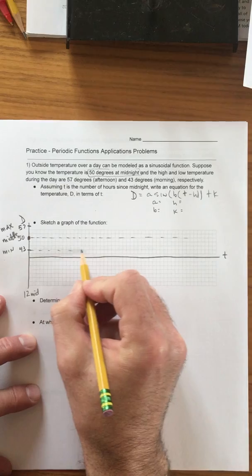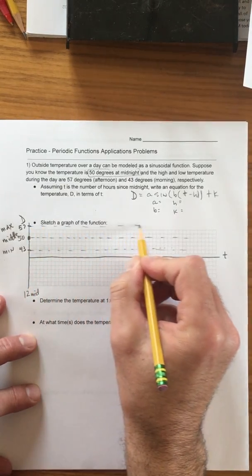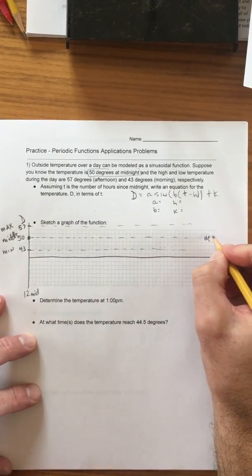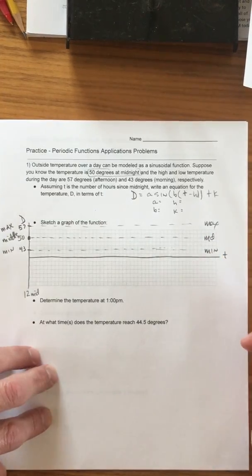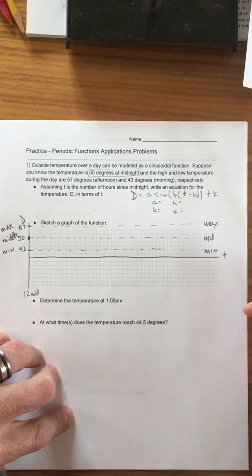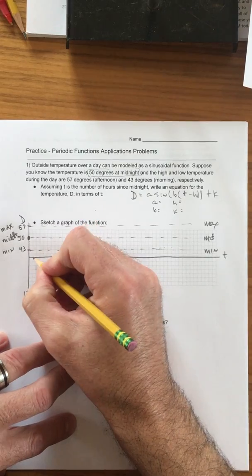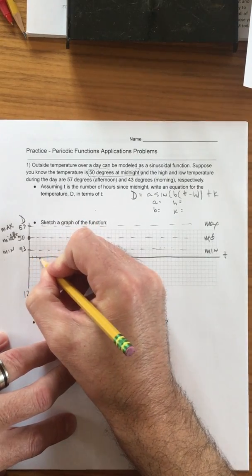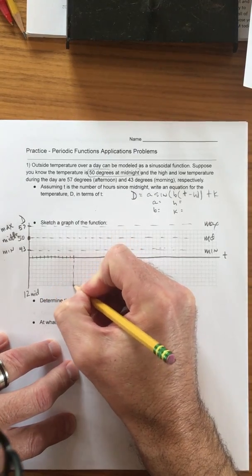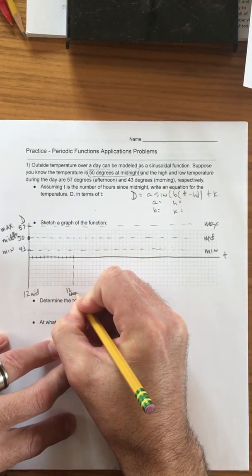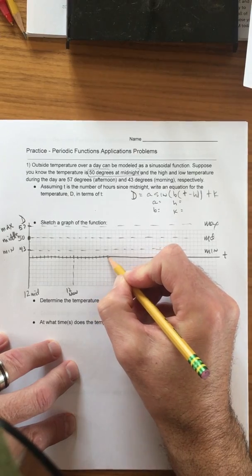I'm gonna put a dash line there and then up there. So that's our mid, our max and our min. Now we're doing this by day so let's just do something like this: 12, 1, 2, 3, 4, 5, 6, 7, 8, 9, 10, 11, 12. So that'll be 12 noon. And then 1, 2, 3, 4, 5, 6, 7, 8, 9, 10, 11, 12.